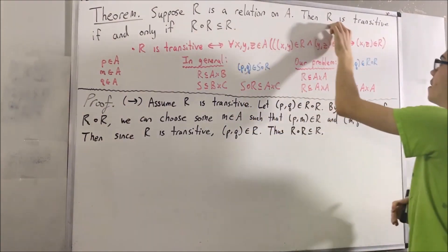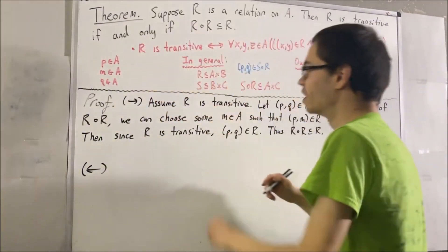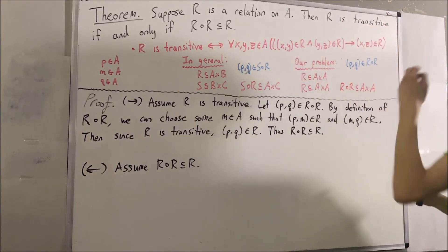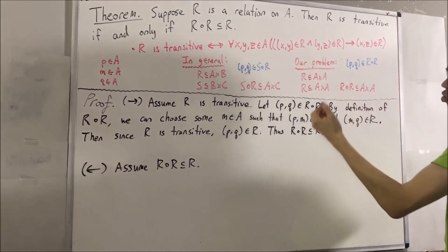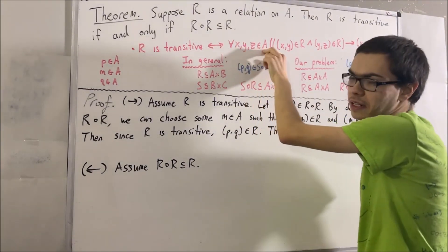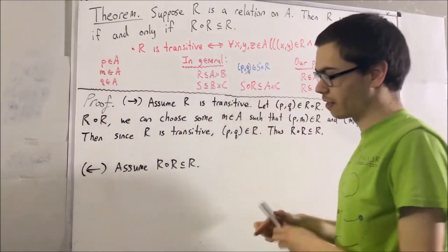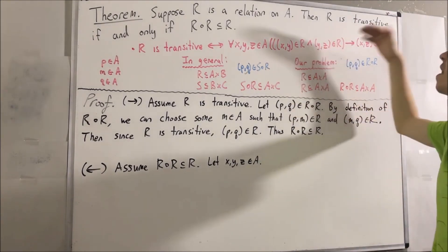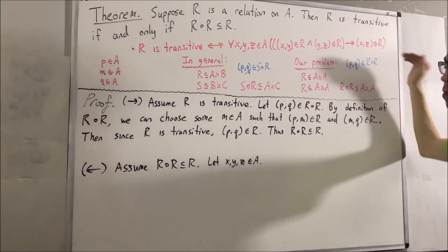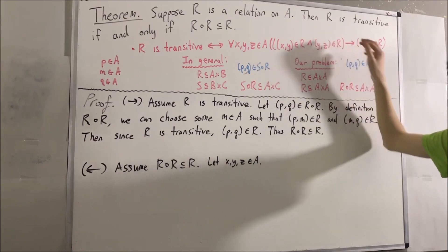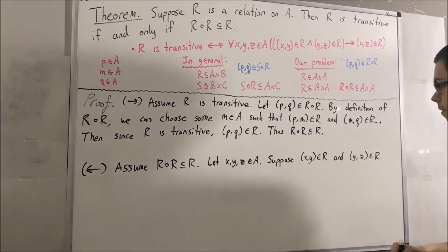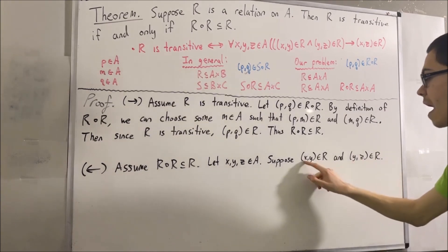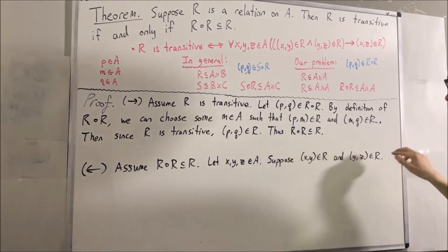Now we're going to show the other direction: if R∘R ⊆ R, then R is transitive. To do so, assume R compose R is a subset of R. Our whole goal now is to deduce that R is transitive, meaning we want to prove the transitivity statement for every three elements in A. So give me any three elements in A — call them X, Y, and Z — and suppose that (X, Y) and (Y, Z) are both elements of R. From compositions and relations, we can think of Y as the intermediate element and conclude that (X, Z) is an element of R compose R.